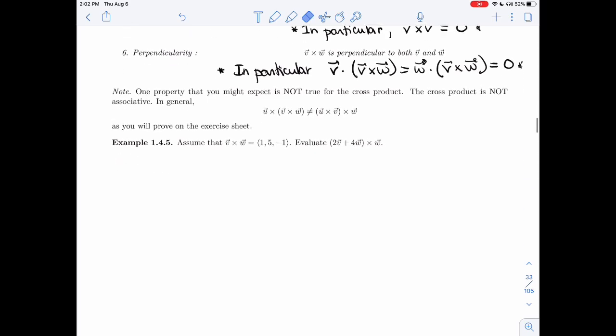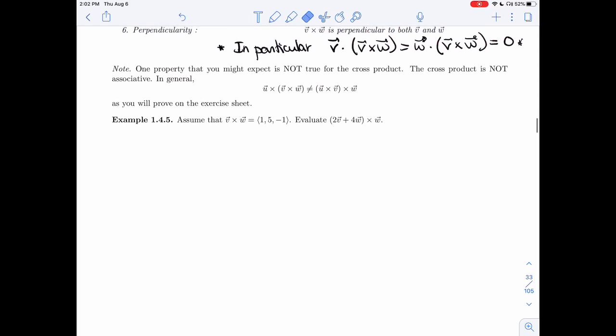All right, let's do this example. I am not given v and w, but I'm given their cross product. So the cross product is 1, 5, minus 1. I cannot get v and w from this information. That's very little. But I'm asked to evaluate 2v plus 4w. So let's try that. Plus 4w. And I want to take that vector and cross it with w.